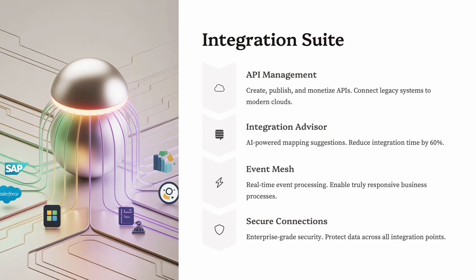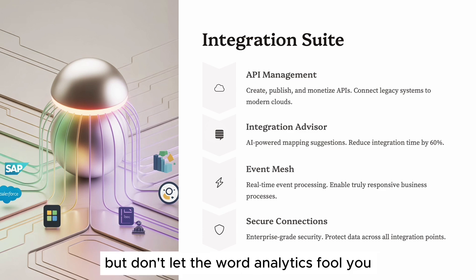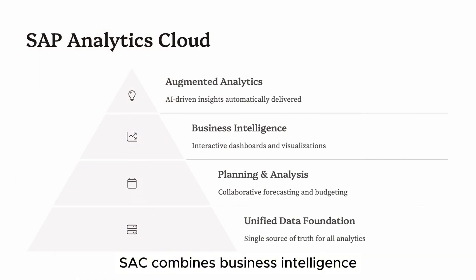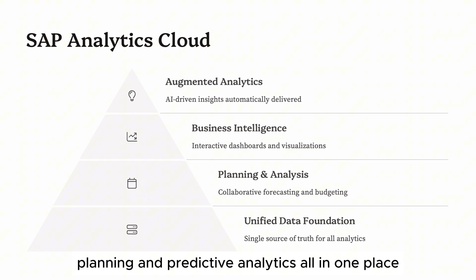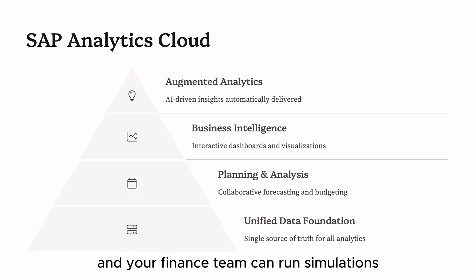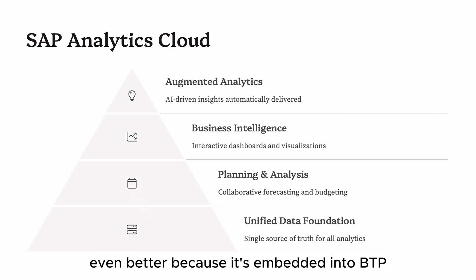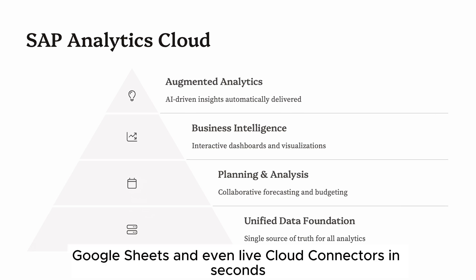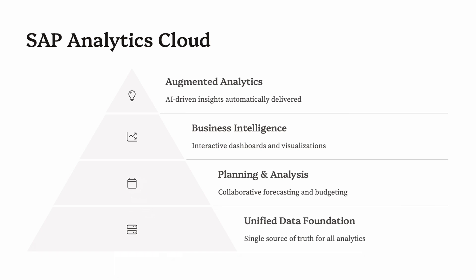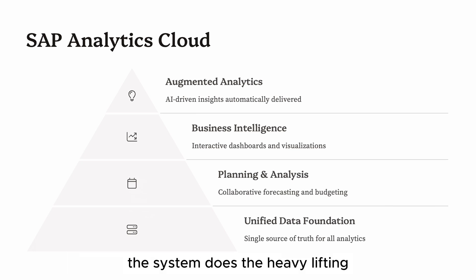Pillar 4: Analytics. The final pillar is SAP Analytics Cloud, or SAC. But don't let the word analytics fool you — this isn't just a dashboard tool. SAC combines business intelligence, planning, and predictive analytics all in one place. So your HR team can analyze headcount trends, your sales team can build forecasts, and your finance team can run simulations without switching platforms. Because it's embedded into BTP, SAC can pull data from SAP HANA, Excel, Google Sheets, and even live cloud connectors in seconds. And with features like smart insights, natural language queries, and AI-generated visuals, users don't need to be data scientists anymore — the system does the heavy lifting.